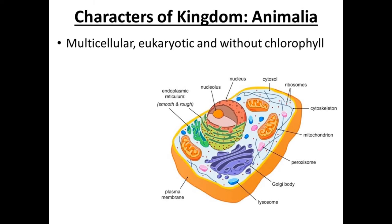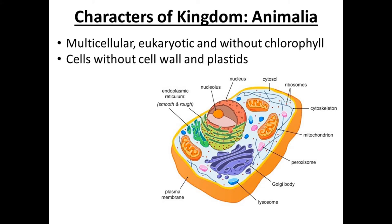The first characteristic of Kingdom Animalia is that they are multicellular, eukaryotic, and without chlorophyll. In the plant kingdom, chlorophyll is present and plants perform photosynthesis. But in animals, chlorophyll is absent. Animals are multicellular with many cells and eukaryotic — a true nucleus is present. Cells are without cell wall and plastid. The outer membrane is the plasma membrane. Plastid is also absent. Central vacuole is absent.